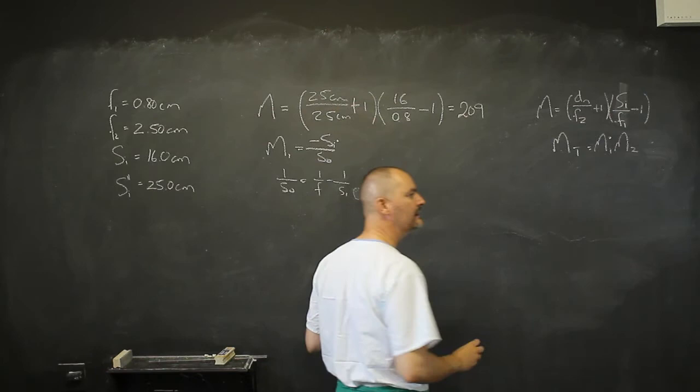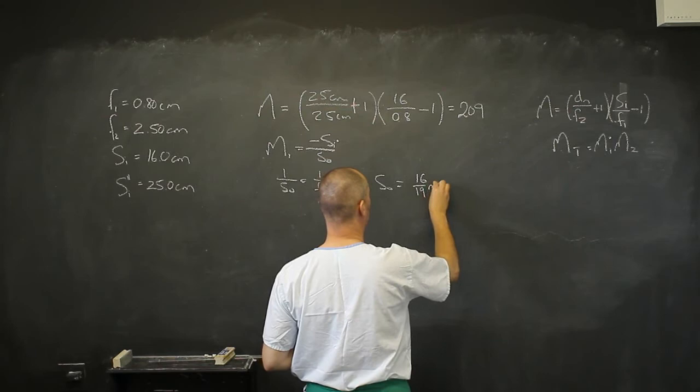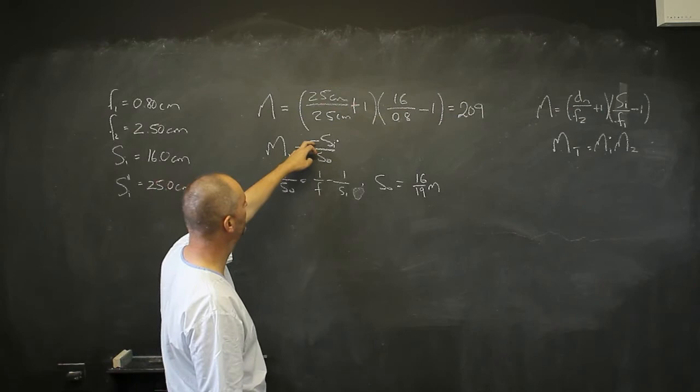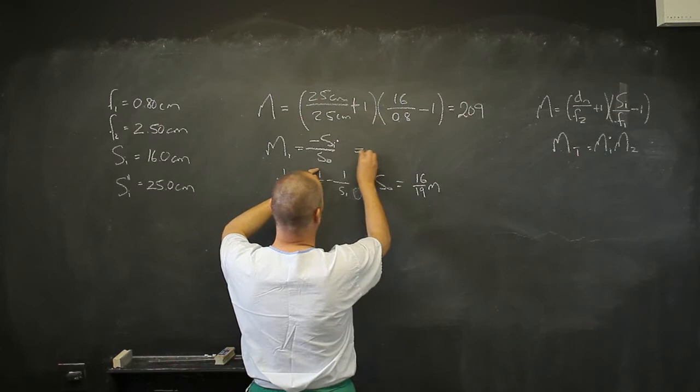Just check on your calculator, 16 over 19 meters. And if I plug that in there, it's going to be 16 divided by 16 over 19, but a negative, and that is going to give me a negative 19 magnification.